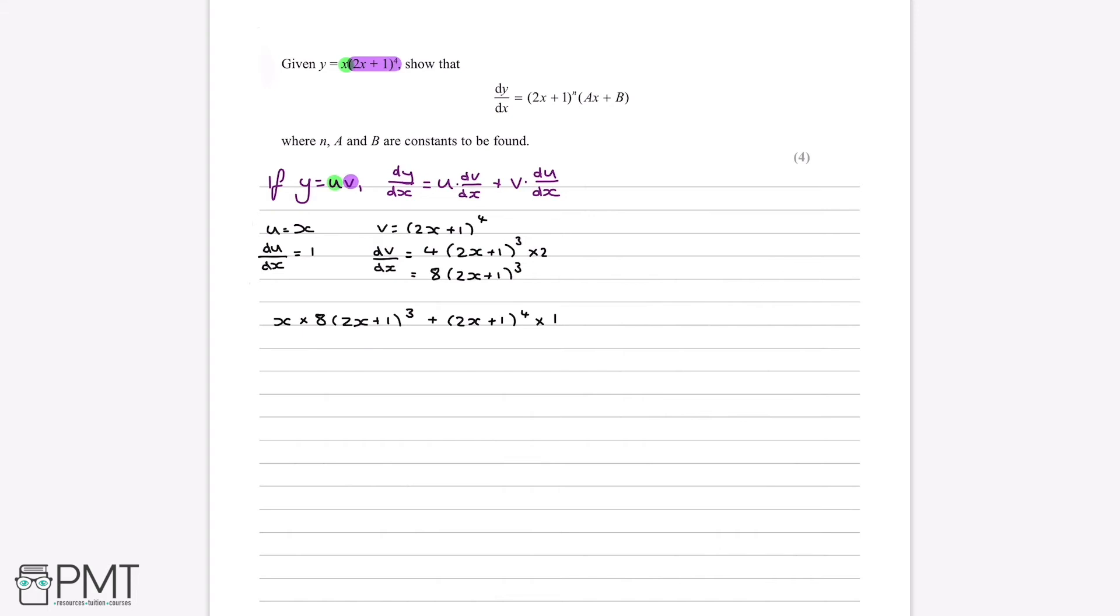If we simplify this a bit more, we get 8x multiplied by 2x plus 1 to the power of 3 plus 2x plus 1 to the power of 4. And we can see that in both of these terms, there's a common factor of 2x plus 1 to the power of 3. So we can take this out and put it outside some brackets.